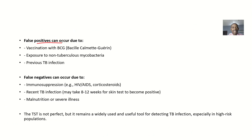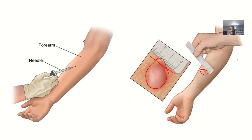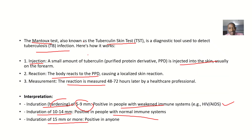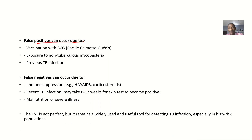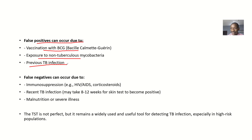Now let's talk about false negatives and false positives. Some people might get a positive result indicating tuberculosis, but it's false. It could be that the person was recently vaccinated with the BCG (Bacillus Calmette-Guérin) vaccination. Also, if you have been exposed to non-tuberculosis mycobacteria, you get a false positive. If you have a previous tuberculosis infection history, you might also have a false positive.